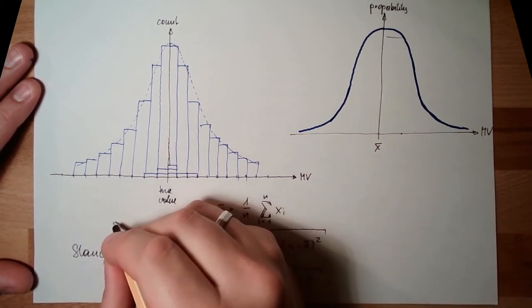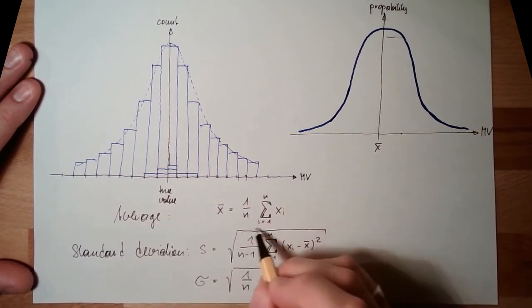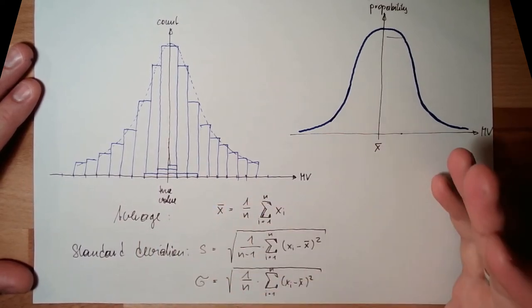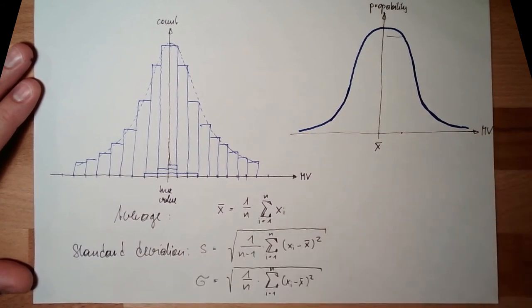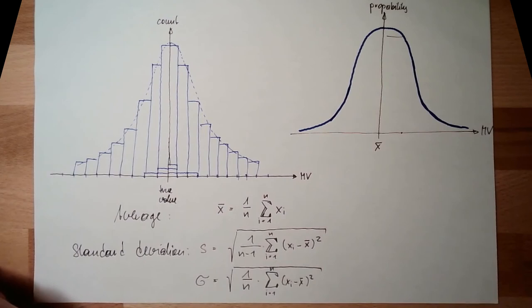So this is standard deviation. And this is the average. The average is my measured value after the method and the standard deviation gives how reliable it is.